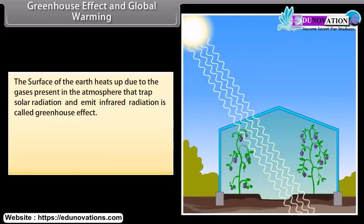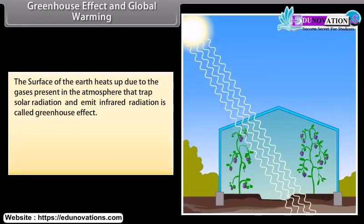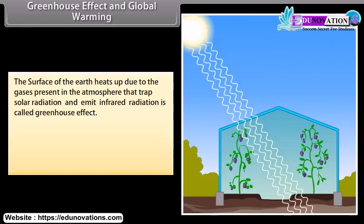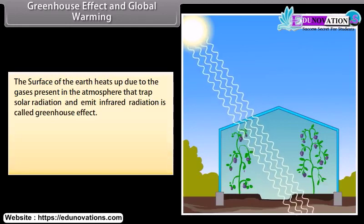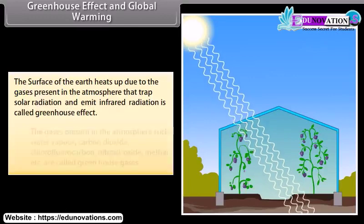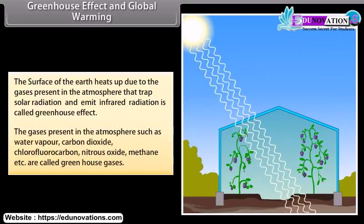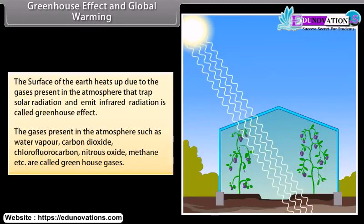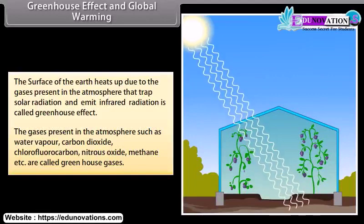The surface of the earth heats up due to gases present in the atmosphere that trap solar radiation and emit infrared radiation — this is called the greenhouse effect. The gases present in the atmosphere, such as water vapor, carbon dioxide, chlorofluorocarbon (CFC), nitrous oxide, and methane, are called greenhouse gases.